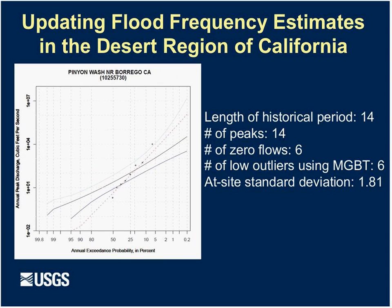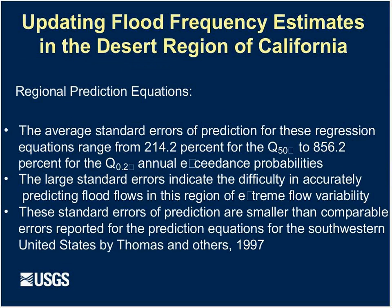The second example is the opposite extreme: a short-term record site with six zero flows, all identified as low outliers. The at-site standard deviation was 0.18, but because it was a short-term record, it didn't receive much weight in the final frequency estimates. To illustrate the variability at this site, the lowest recorded non-zero discharge was 2 CFS and the largest recorded discharge was 10,000 CFS — that is the extreme variability we had to deal with.